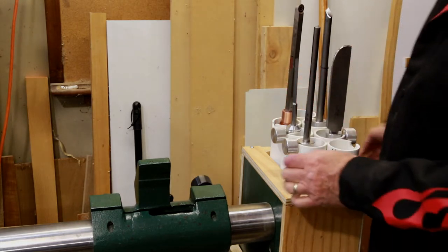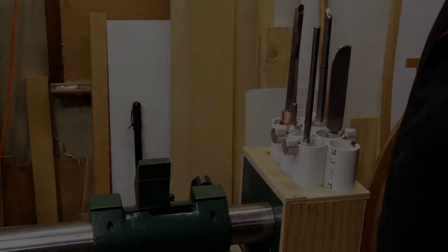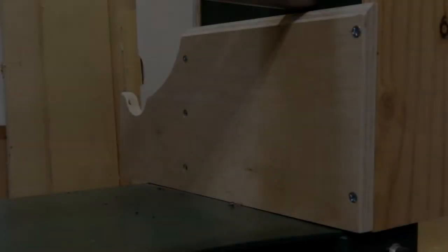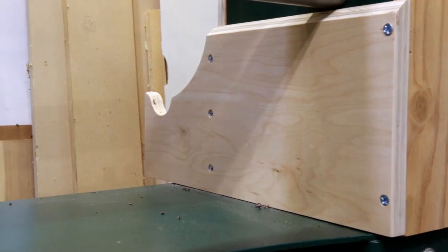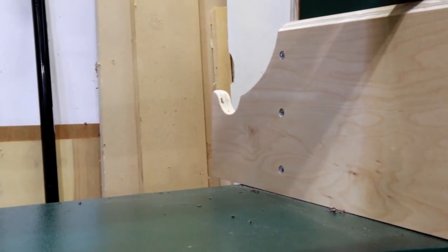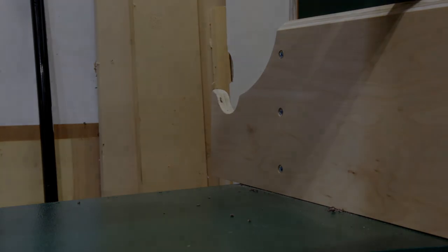Let me take a minute and show you the tailstock. Simply put, this is just the piece that holds the box on the bottom. It's sitting on the tool tray. As you can see, there's a notch cut in down here at the bottom, and the quill just simply lays in that, and that works really well.